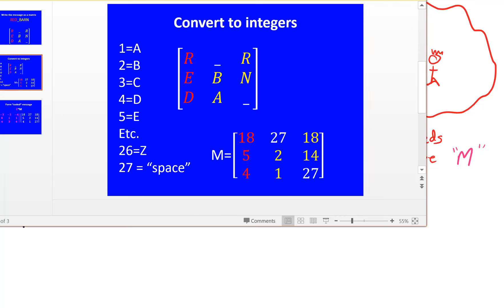Next, we need to convert that matrix of letters and spaces to a matrix containing integers. So R is the 18th letter of the alphabet, so I'll make that an 18. And E is 5, that's the 5th letter of the alphabet. And D is the 4th letter, and so forth. And the spaces we will enumerate with a 27.